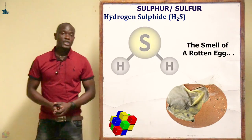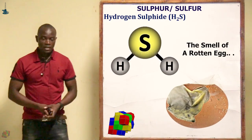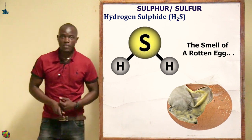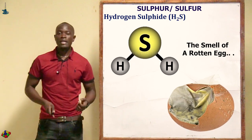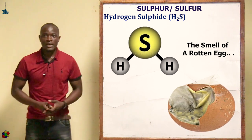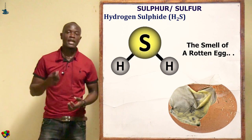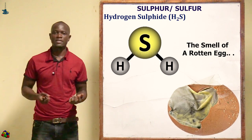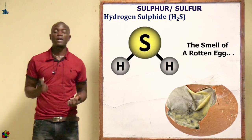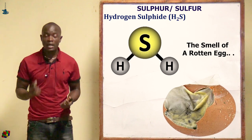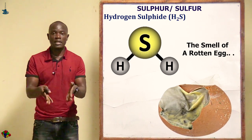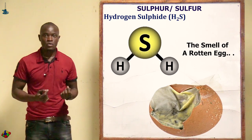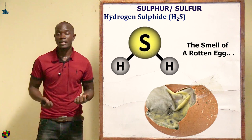Hydrogen sulfide is a gas made up of hydrogen and sulfur. It is highly poisonous and occurs naturally in some deposits mixed with natural gas. It has the characteristic smell of a rotten egg — that smell is the smell of hydrogen sulfide.